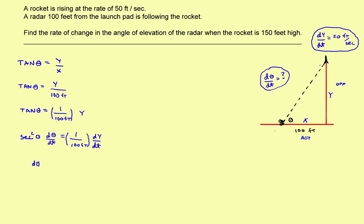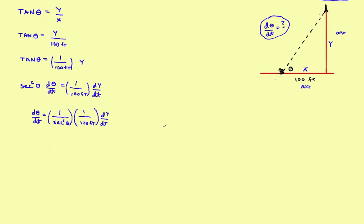So dθ/dt equals (1/100) · dy/dt, all divided by sec²(θ). I find that working with 1 over sec² is not convenient on a calculator, so I'll note that 1 over sec² is the same as cos². So: dθ/dt = cos²(θ) · (1/100) · dy/dt. I'm doing this just because it makes the computation a little bit easier.